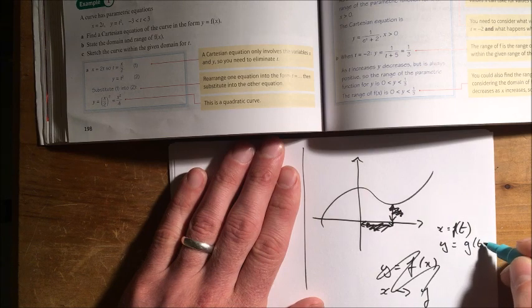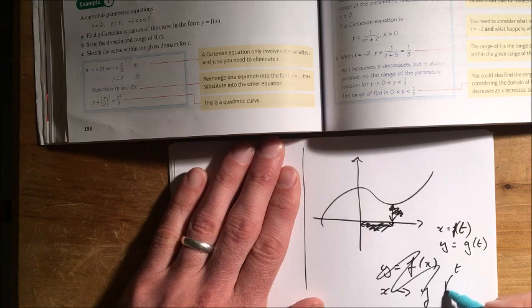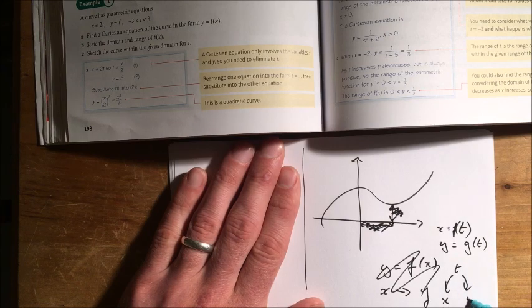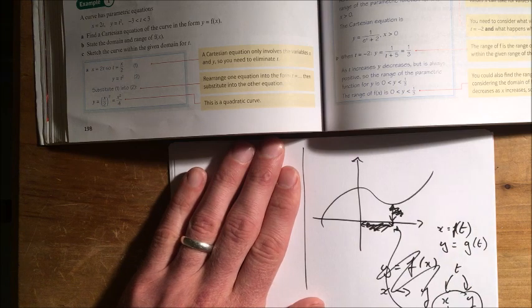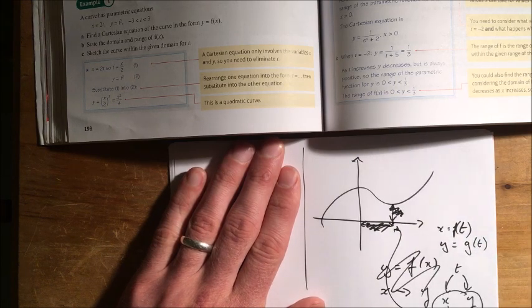And then I'll tell you how to calculate y by giving you another function of t. So g of t. So I give you t. From t, you can work out x, and you can work out y. And then those you plot on your axes as your x and y. So that's what a parametric equation is.